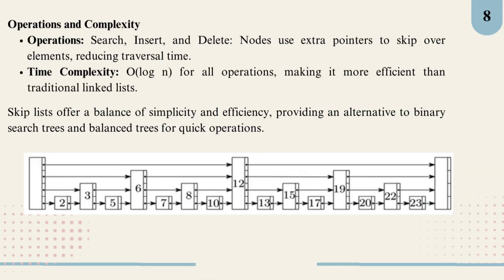Let's go over the main operations in a skip list: search, insert, and delete. In a skip list, nodes use extra pointers to skip over several elements, which reduces traversal time. These additional pointers make it much faster to reach the desired node compared to a regular linked list where we have to go node by node. The time complexity for all these operations, whether it's searching, insertion, or deletion, is O(log n). This makes skip list far more efficient than traditional linked lists, especially as the list grows. Skip lists strike a great balance between simplicity and efficiency, providing an alternative to binary search trees and balanced trees for quick operations. They are particularly useful when you need fast search and update times without the complexity of tree structures.